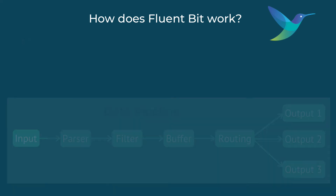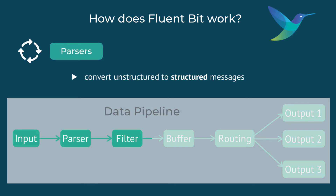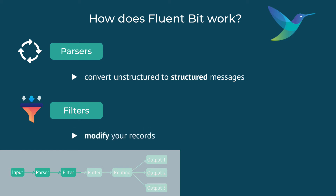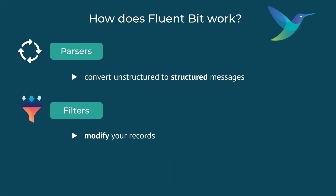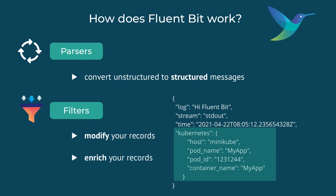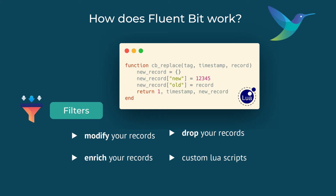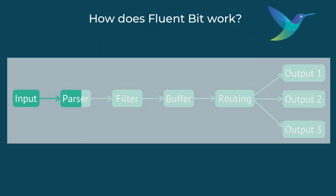Once logs are collected and read, FluentBit will process them. Depending on the log format, we would need to parse them differently. For that, FluentBit has different filters and parsers. Filters can be used to change the log record or even add some additional metadata to it, like pod ID or namespace where the log is coming from. You can also use filters to drop or ignore some records. To make the filtering even more flexible, in FluentBit you can use custom Lua scripts as filters to modify and process the records.